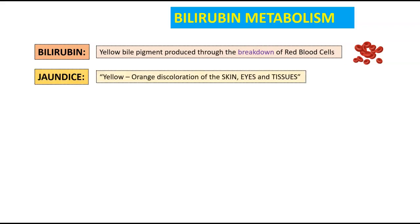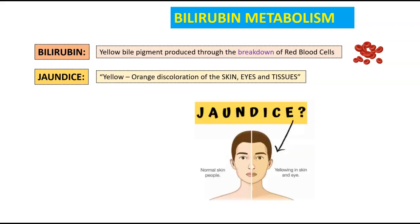Jaundice is the yellow-orange discoloration we see in our skin, eyes, and tissues. Here's a diagram. On one side you can see the normal-skinned individual; on the right side we see the jaundiced individual. Just make sure you don't confuse this with a nice tan.